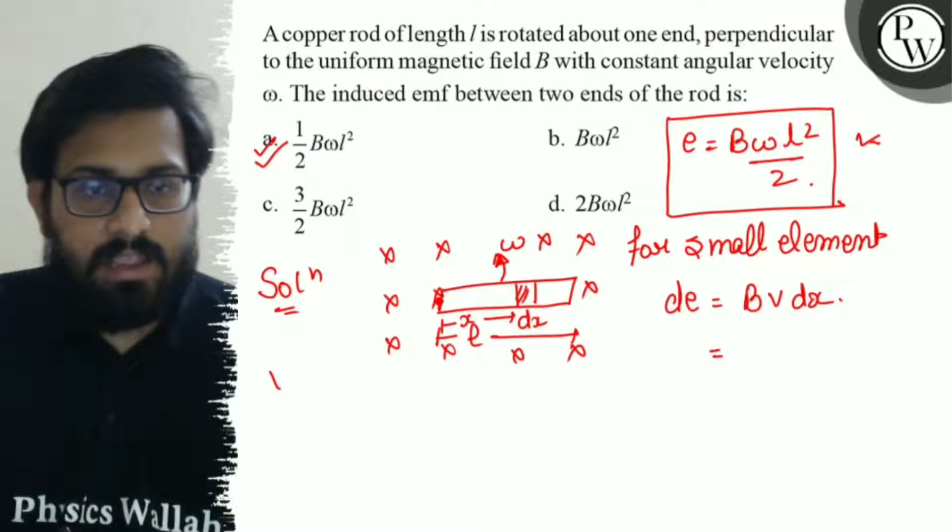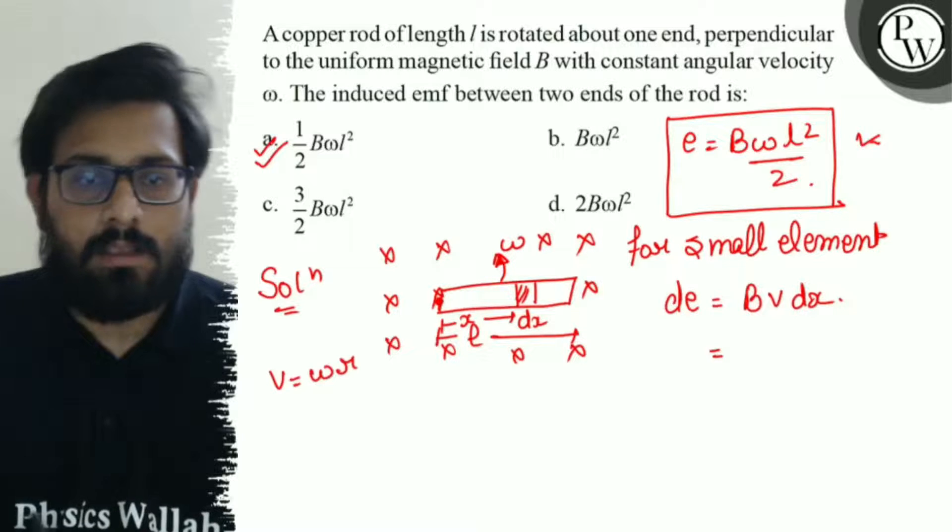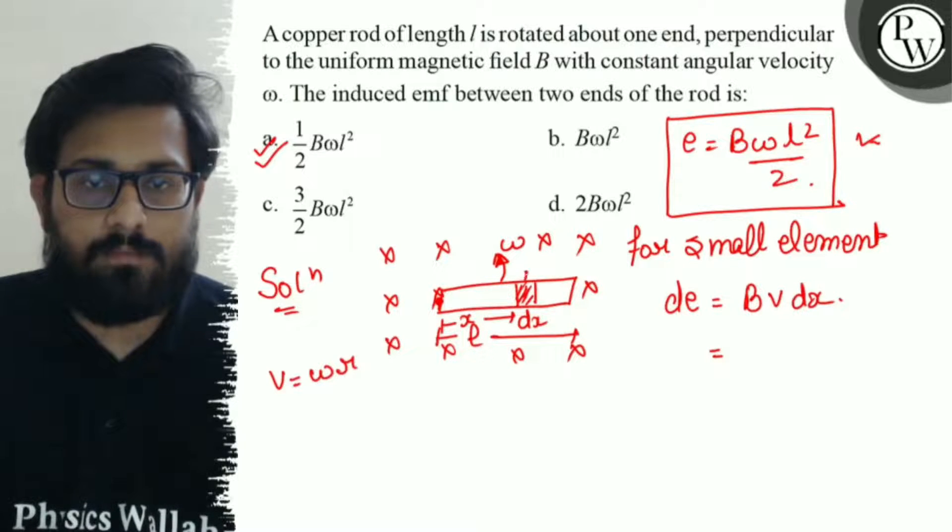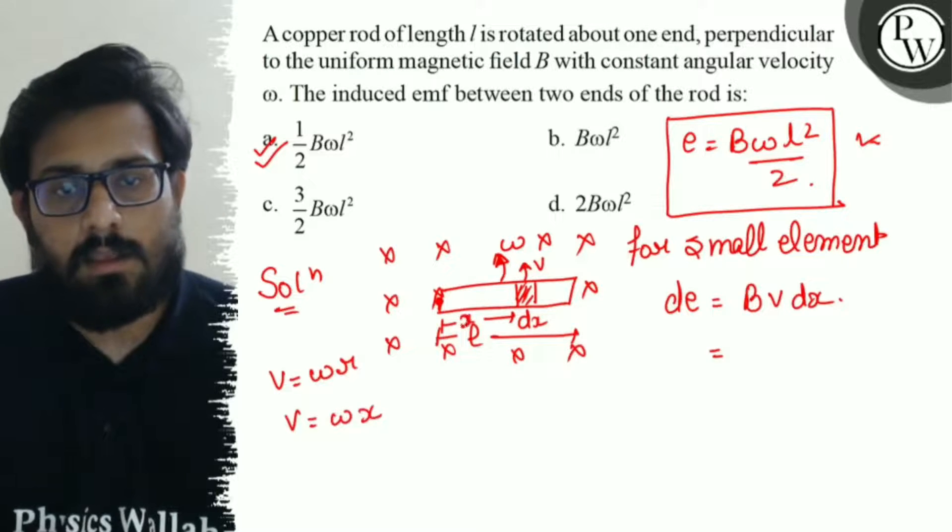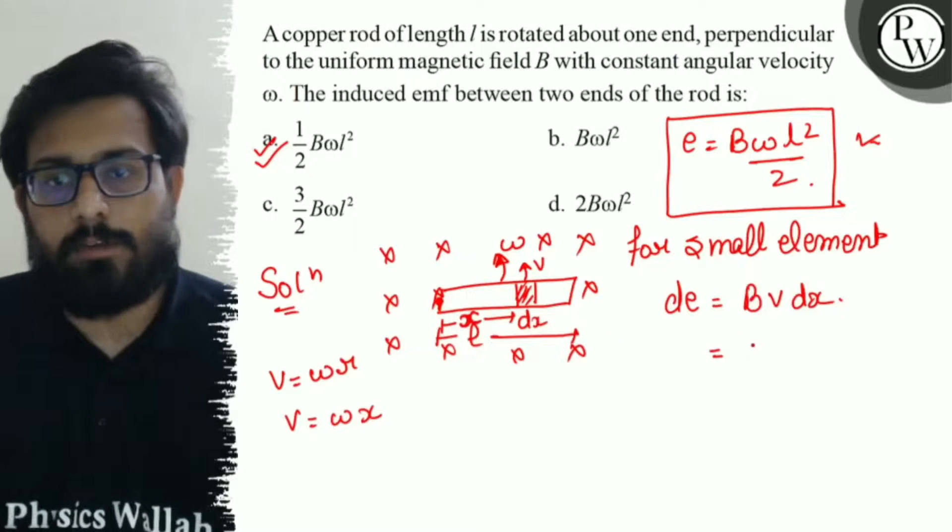Now, we know that V equals to omega R. So, for this small element, if we consider the value of V, then we have V equals to omega into X, where X is the distance from the center.